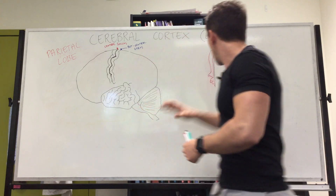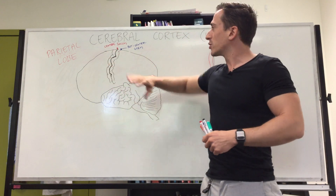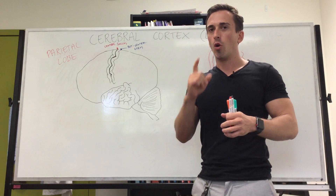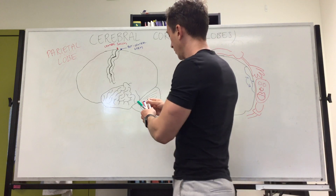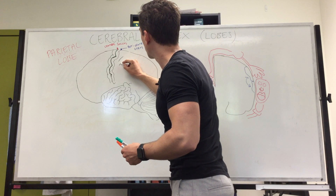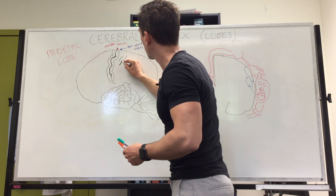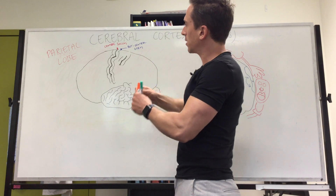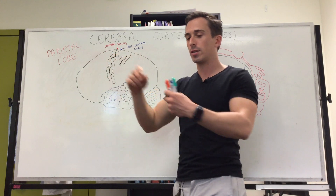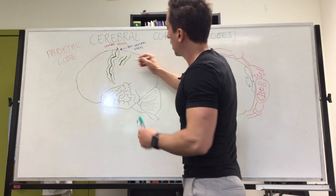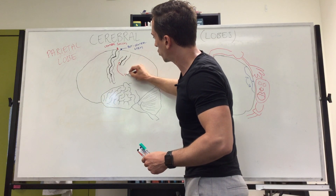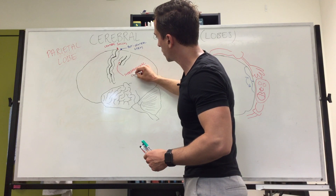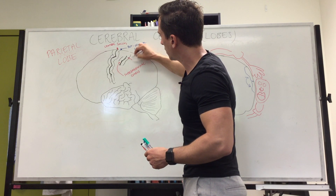So that is the somatosensory cortex at the post-central gyrus. It's not the only part of the parietal lobe we need to discuss. There are two other gyri: the supramarginal gyrus and the angular gyrus. These are located just behind the post-central gyrus, or the somatosensory strip.